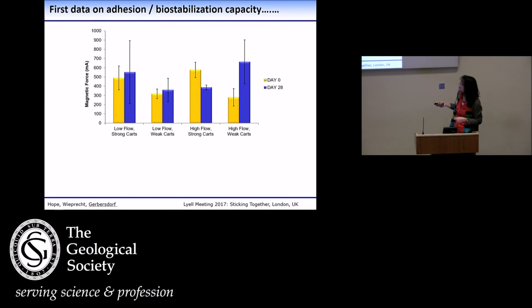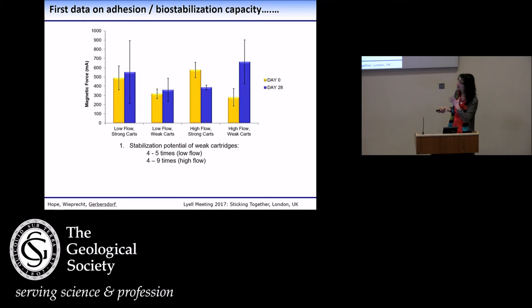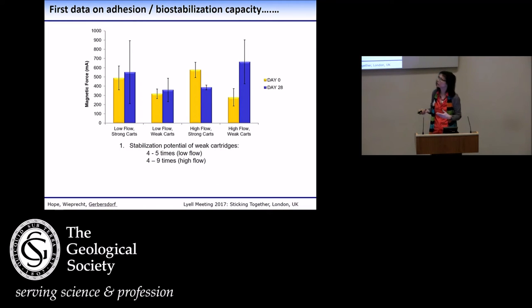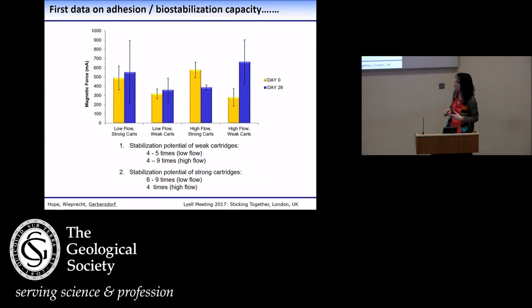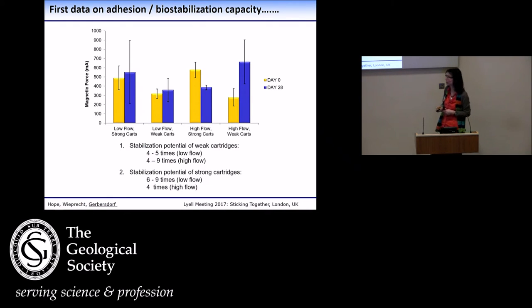Compared to bare glass beads before biofilm colonisation, there was an increase in stabilization potential four to five times under low flow and four to nine times under high flow for weak cartridges. For the stronger ones, because of this unexpected erosional behavior, we did see an increase of six to nine times in low flow, but only four times in high flow.